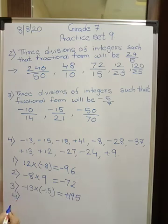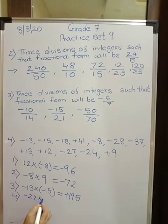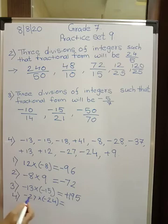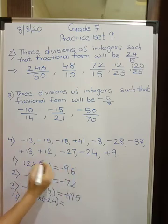And fourth one, this I want you to do on your own. We will minus 27 into minus 24. You carry out the multiplication, but I am telling you minus into minus, you will have your plus answer. So take any two numbers, choose and do it.